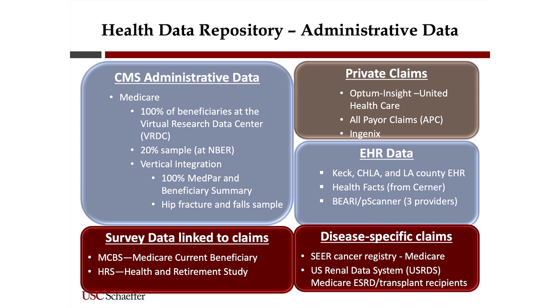Now let's talk about what we have in our data repository — some of our major holdings, though this is by no means an exhaustive list. For CMS administrative data, we have access to 100% of beneficiaries at the Virtual Research Data Center. If you work through Jillian, you can gain access. You just log into this remote system and have access to 100% of all the data that CMS offers. It starts in 2002 and goes through the most recent data available.